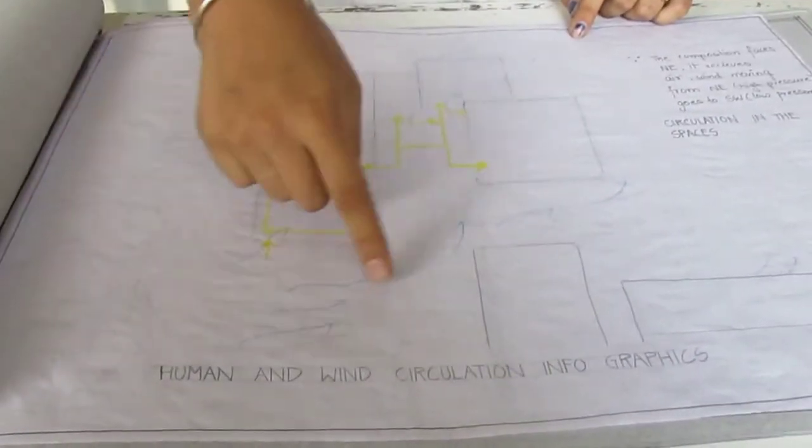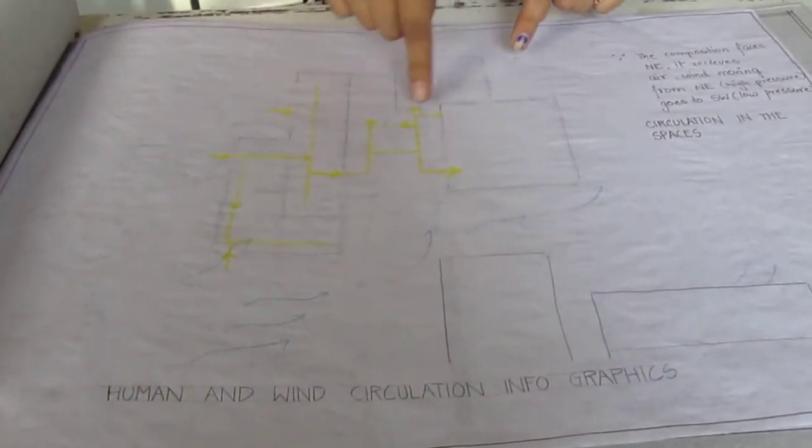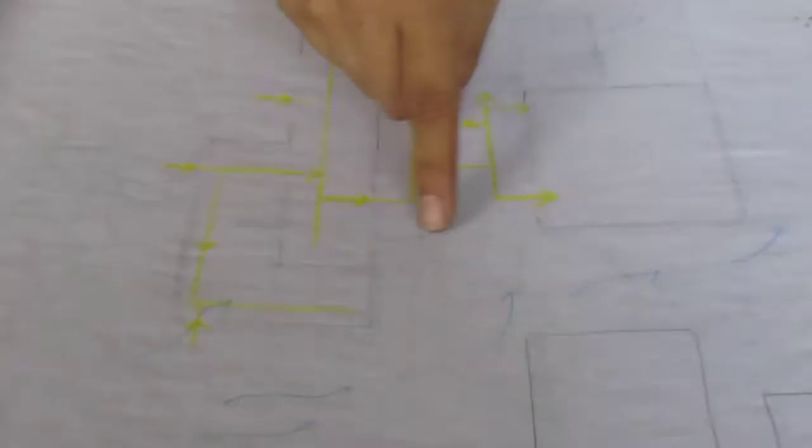The wind is coming from here and circling here and traveling from this place, and it is getting a channel to go from here. It is coming inside through an opening and going from here, finally making the whole place ventilated.